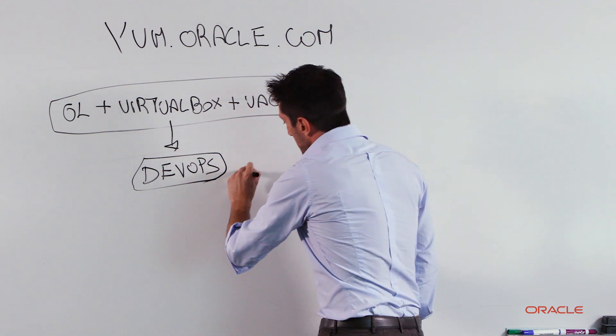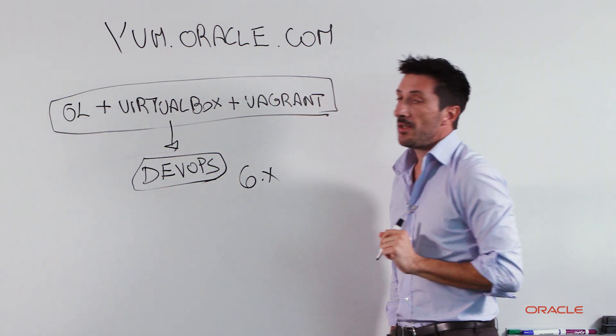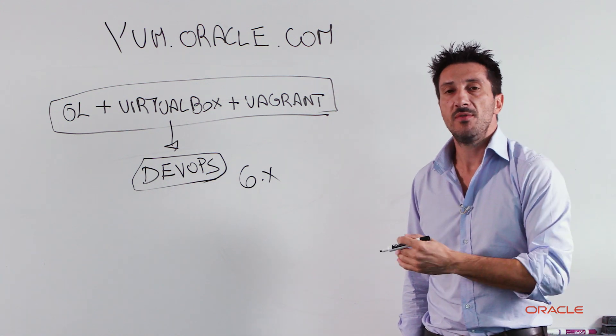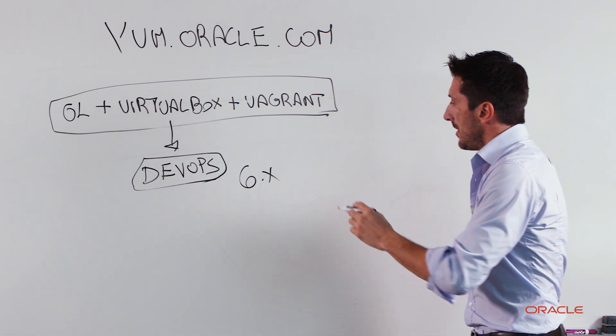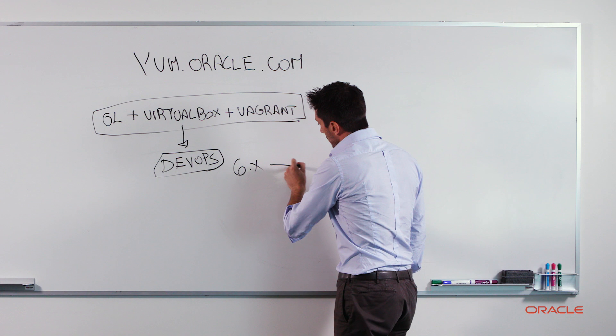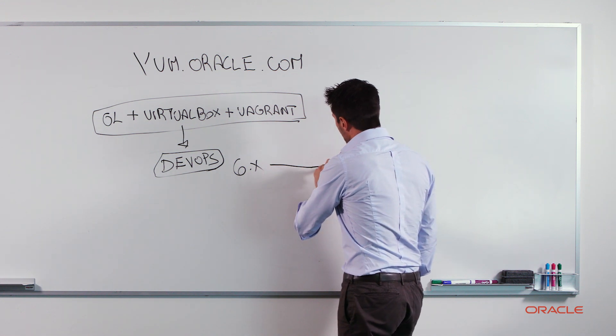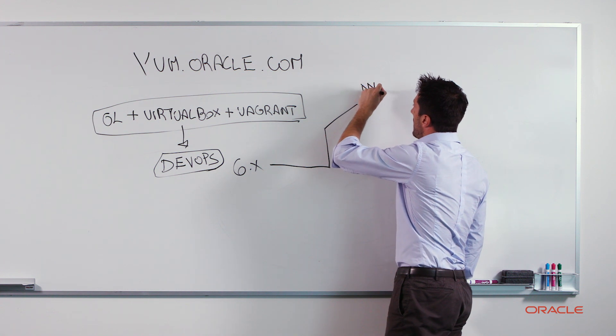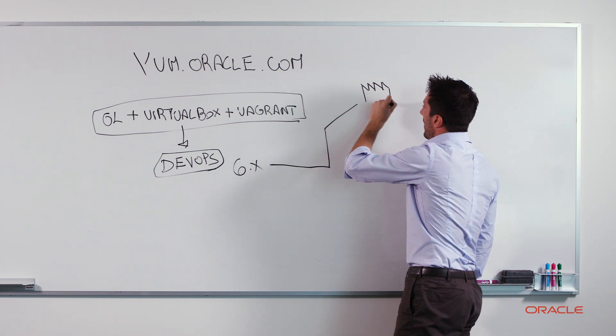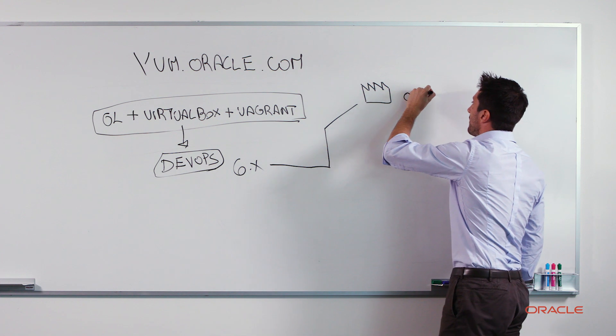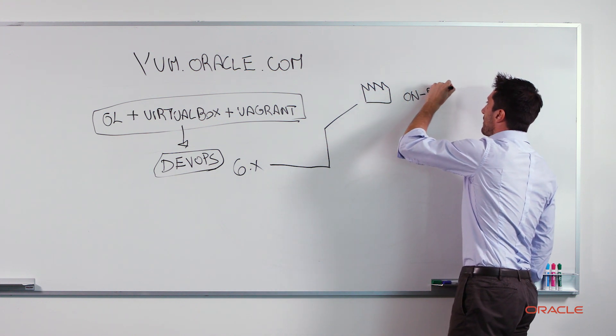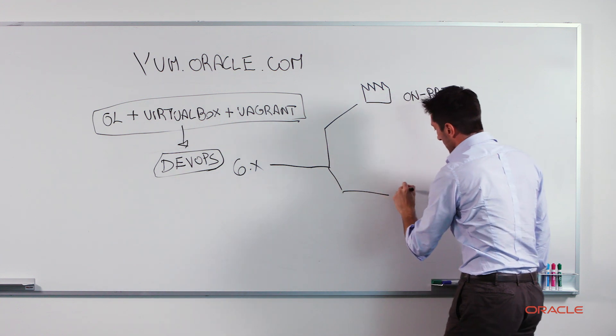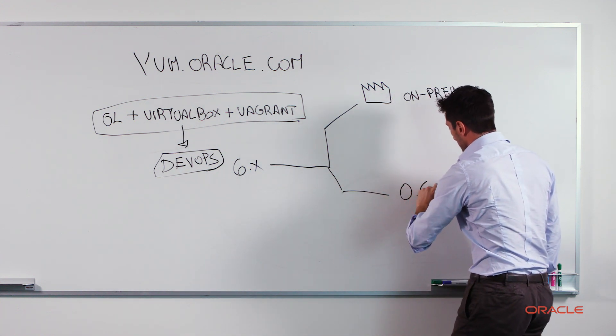VirtualBox 6.x release introduces the capability to export your own local VMs to the Oracle Cloud. So by leveraging the GUI, you can today easily get your development environment running very easily on-prem, but at the same time also on Oracle Cloud Infrastructure.